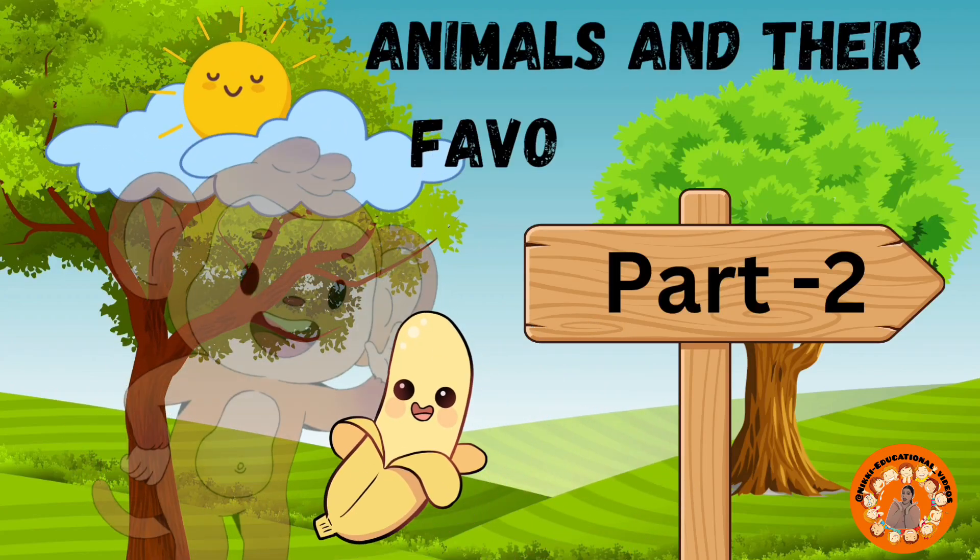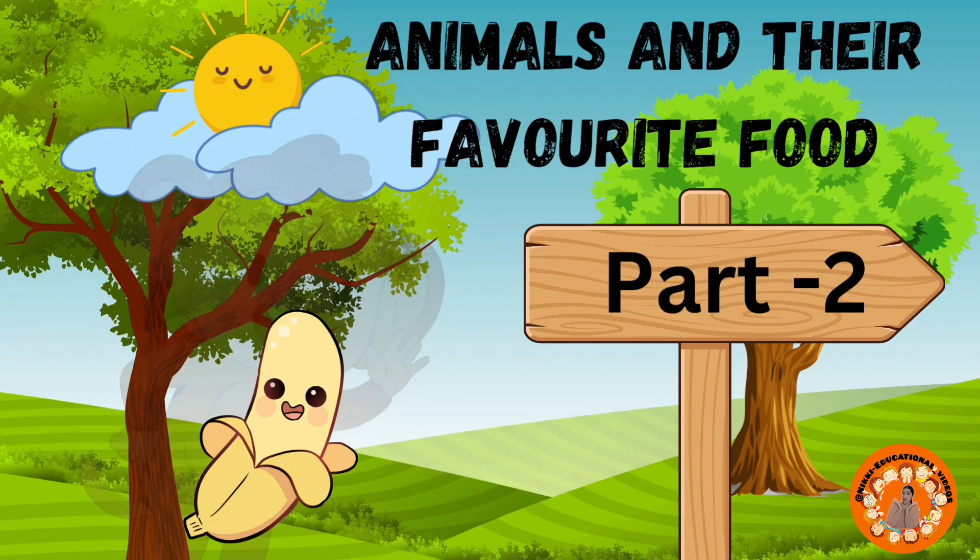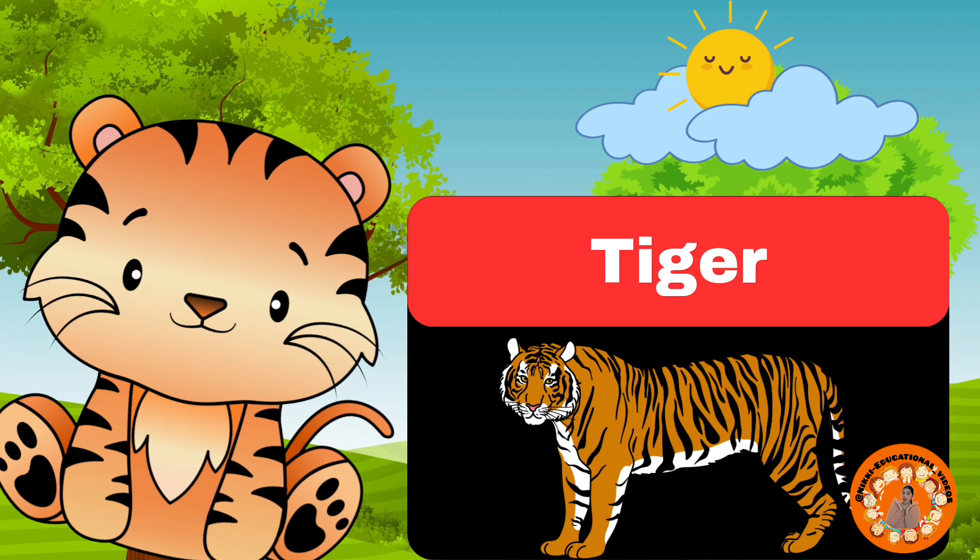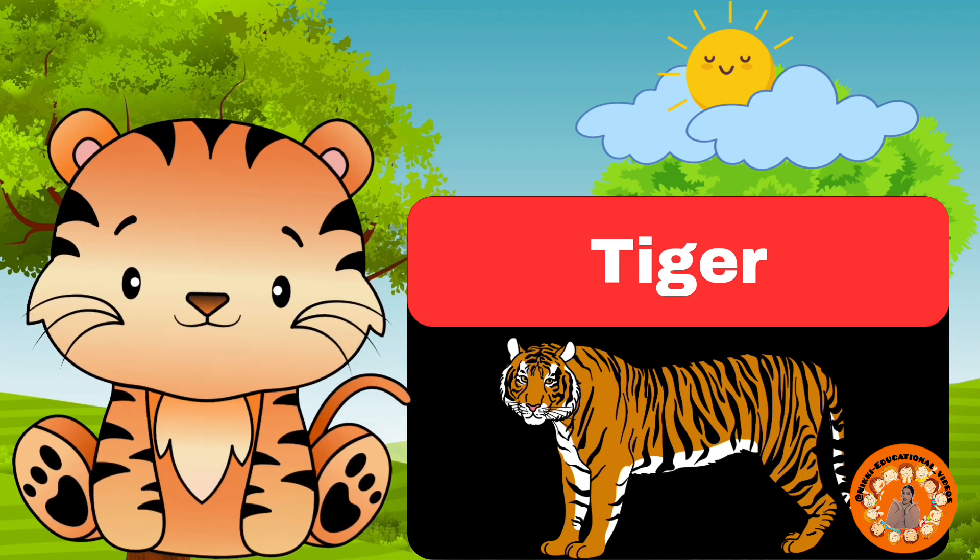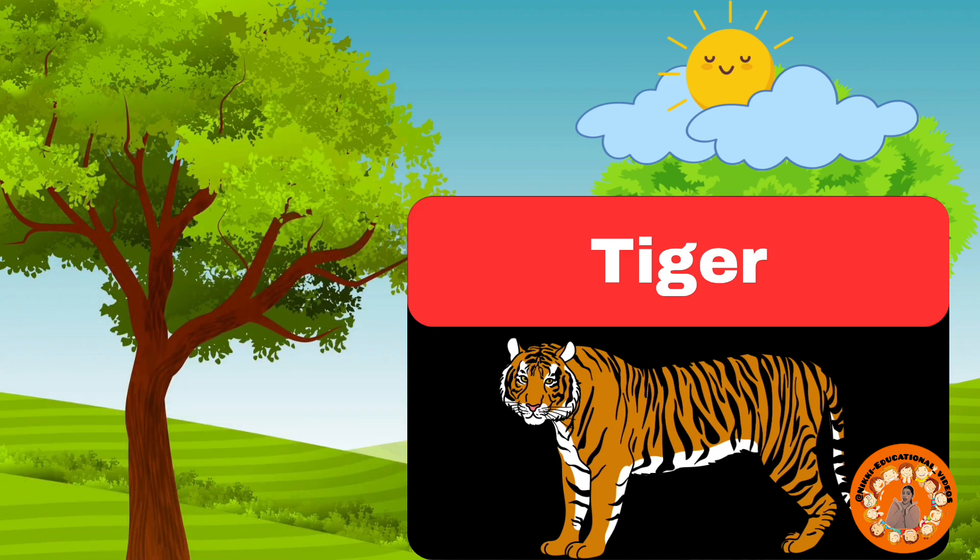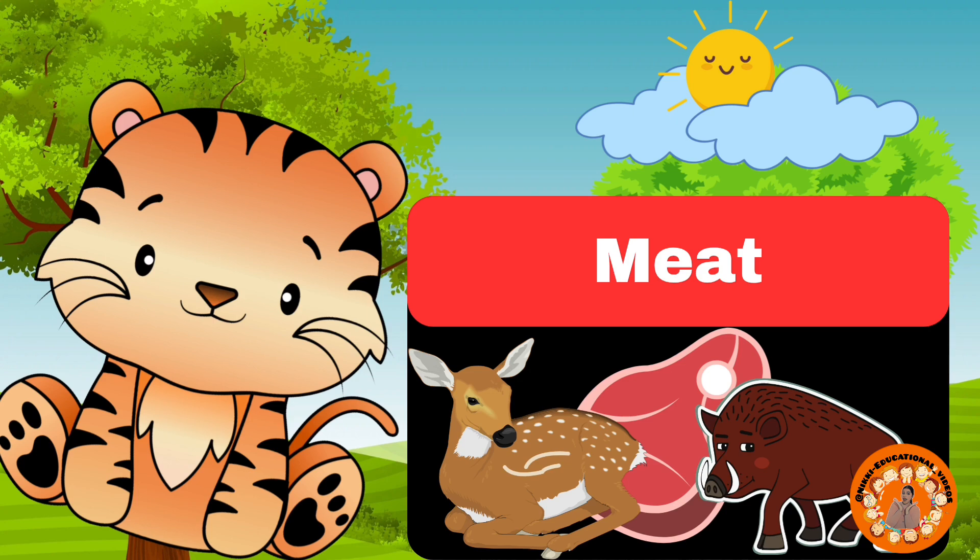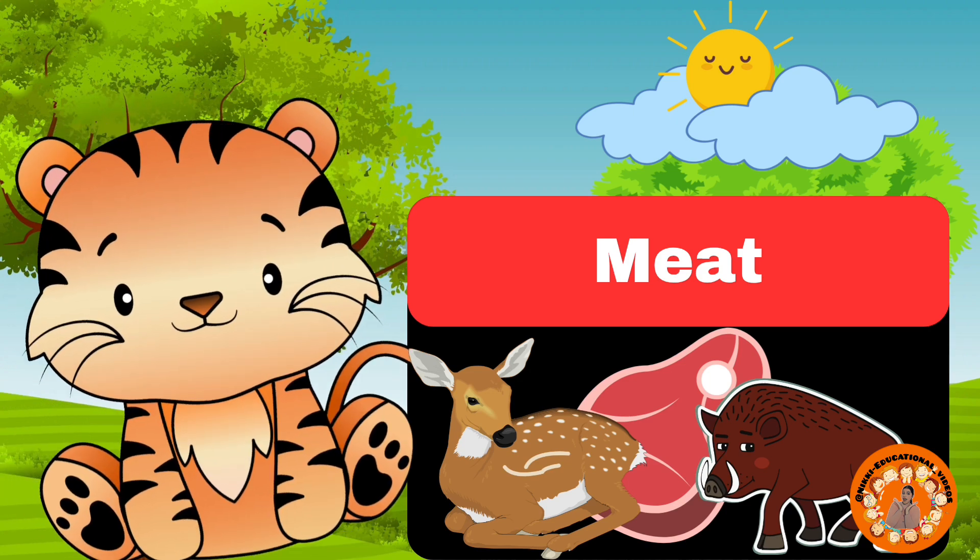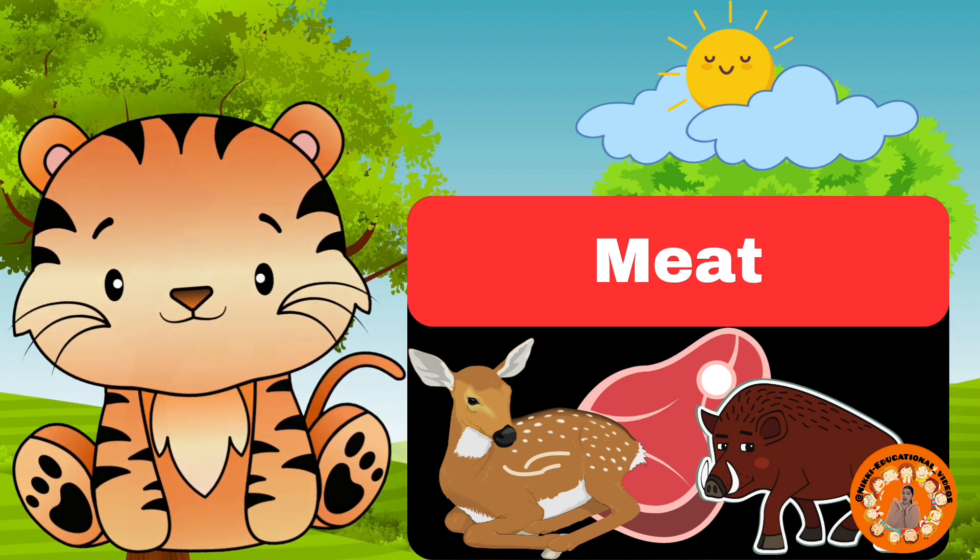Animals and their favorite food, part 2. Hello, I'm a tiger. I love to eat meat, a deer, and a bird. All tigers are carnivores and love hunting for their meat.